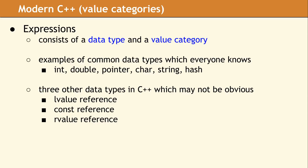Char, string, and containers like hash also have a long history in programming and make sense. Pointers are a carryover from C, and this data type is not that surprising to most. The problem is when we start talking about the data types L-value reference, const reference, and R-value reference.